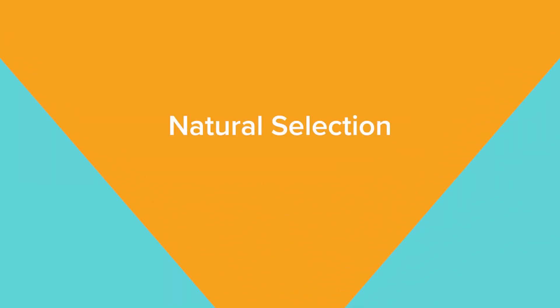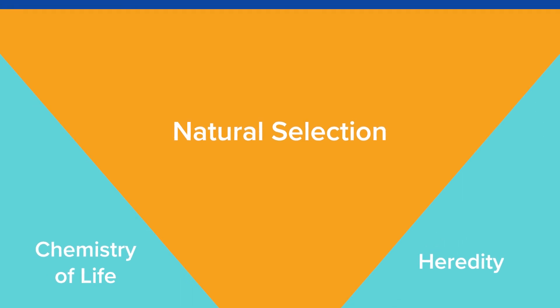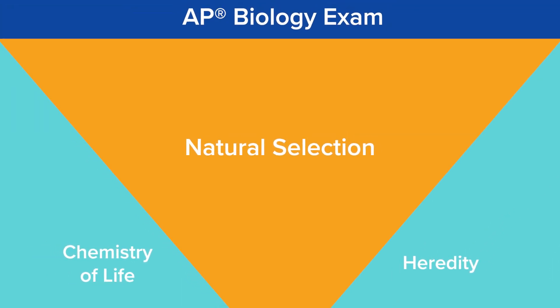Now some of these units will be tested more than others. There will likely be more questions related to the natural selection unit than any other unit, while the chemistry of life and heredity units will be the ones that are the least asked about. But that doesn't mean you can slack off on those units, because they are the basis of the other topics and will still be on the exam.